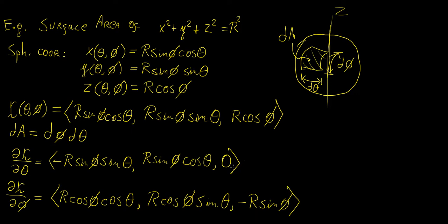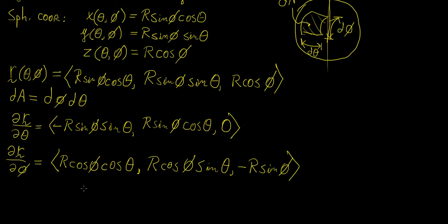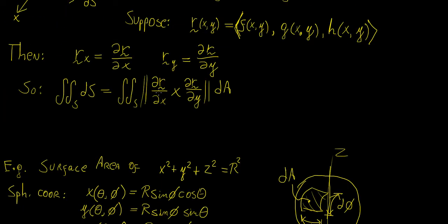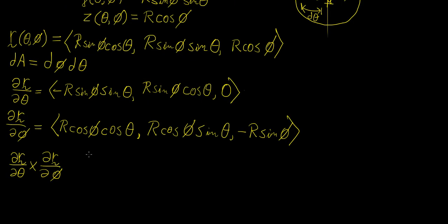Now we take the cross product r_theta × r_phi. You might wonder whether the order matters — the cross product only changes sign with order, but since we're taking the magnitude, it doesn't affect the final answer. So we proceed with this ordering.